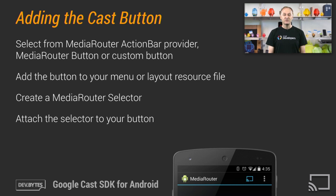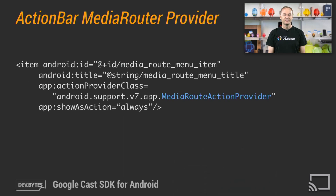The app then has to create a MediaRouter selector, which will filter devices to discover only Cast devices that can run your app. The selector is attached to the Cast button when the activity starts. Here's an example of how easy it is to add a Cast button to the action bar compat using the MediaRouter action bar provider in your menu XML. Other ways of integrating the Cast button are documented by the MediaRouter support library.